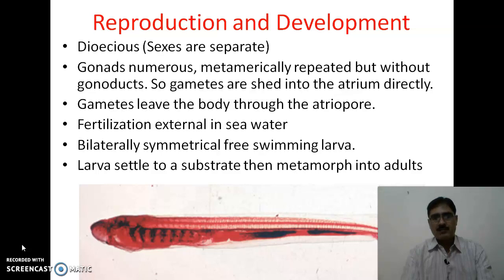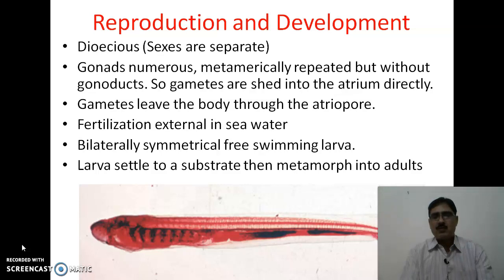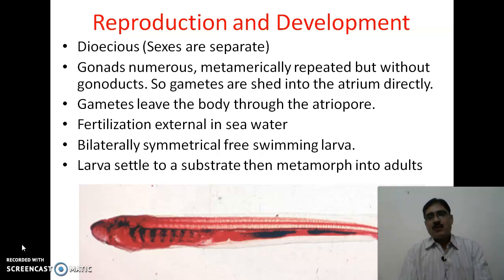After embryogenesis, the fertilized egg develops into a bilaterally symmetrical, free-swimming larva, which is mainly responsible for dispersal of the species. The larva finds a suitable place and then settles on a substrate. After settling, the larva metamorphoses into the adult, which, as we know, remains buried in the sand at the sea bottom.